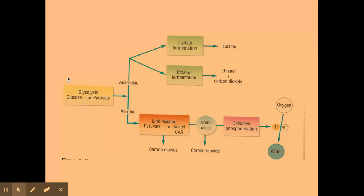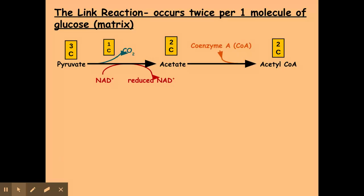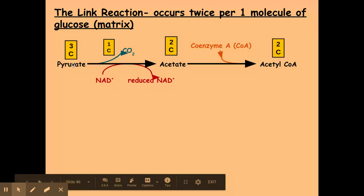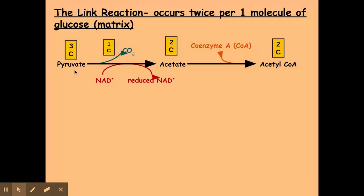We had a look at glycolysis in the last video. We're now going to look at the link reaction, which is the second stage involved in the aerobic respiration cycle. Don't forget that at the beginning, in the glycolysis reaction, we got two molecules of pyruvate for one molecule of glucose broken down. Therefore, this link reaction is going to occur twice per one molecule of glucose. The link reaction is occurring in the matrix of the mitochondria.